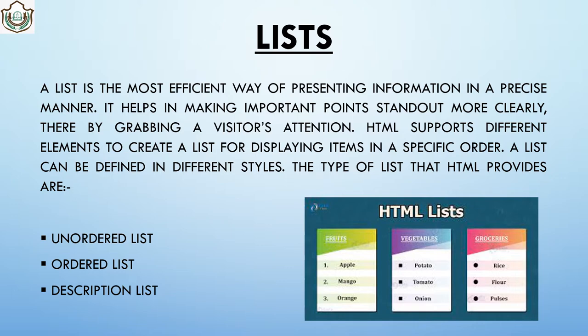A list displays items in order — first thing, then second thing, third thing. A list can be defined in different styles as well. The types of lists that HTML provides are unordered list, ordered list, and description list. So there are three types of lists that we are going to discuss in this chapter.